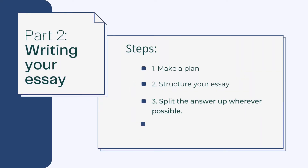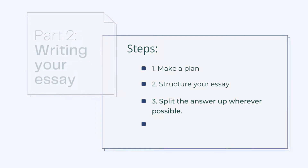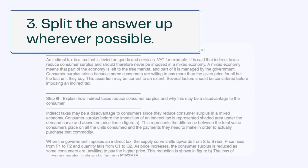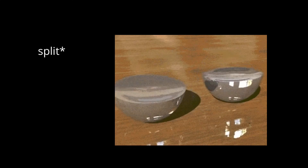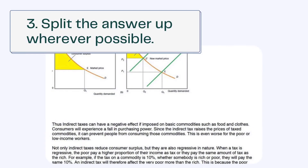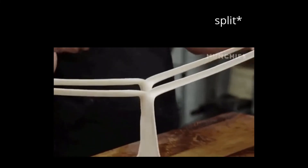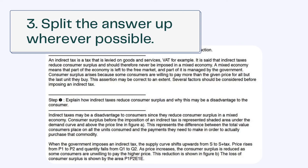Step 3: Split the answer up wherever possible. Use space and separate out points in paragraphs. This not only makes it easier for the examiner to identify the points, but also makes it easy to identify what points have already been made. If multiple requirements are given, it's usually a good idea to separate answers into different headings — this makes it clear to the examiner that all parts of the requirement have been addressed.